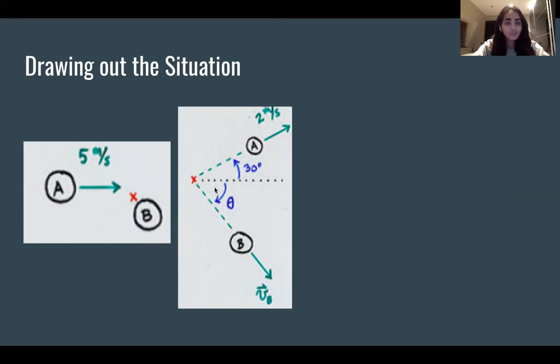And then after this collision, if we call this the straight line, we can say that A is 30 degrees above and B is some unknown at theta. We also know the final velocity of A is 2 meters per second in this direction and B is an unknown.